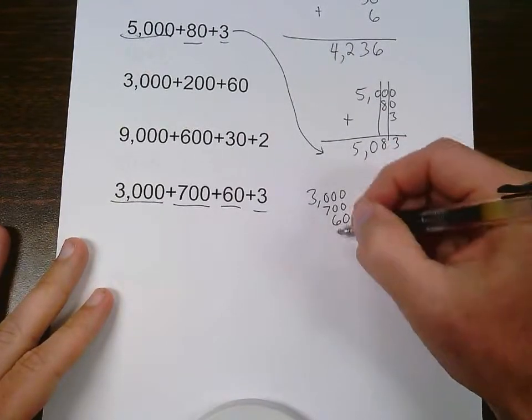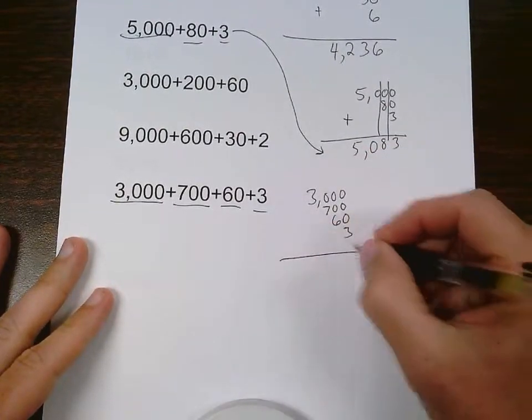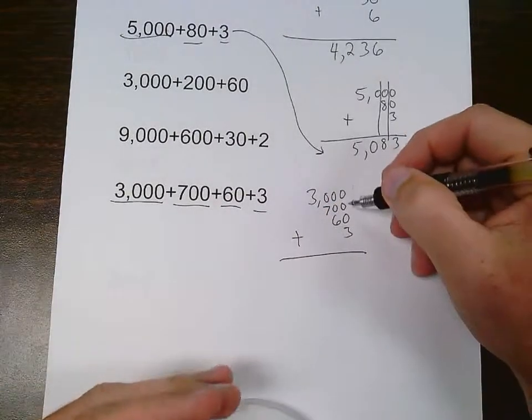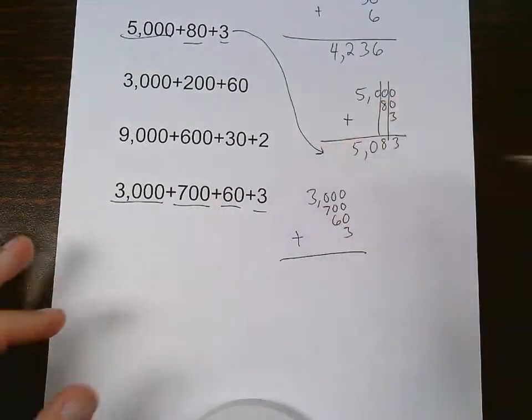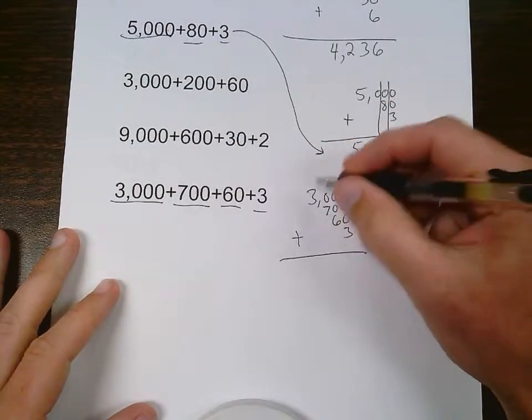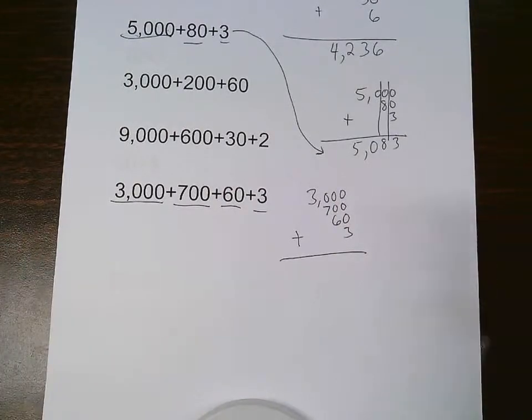So, I have ones, tens, hundreds, thousands. Everything is always lined up at the right and over. So, ones, tens, hundreds, thousands. And if I do that, the adding is so simple.